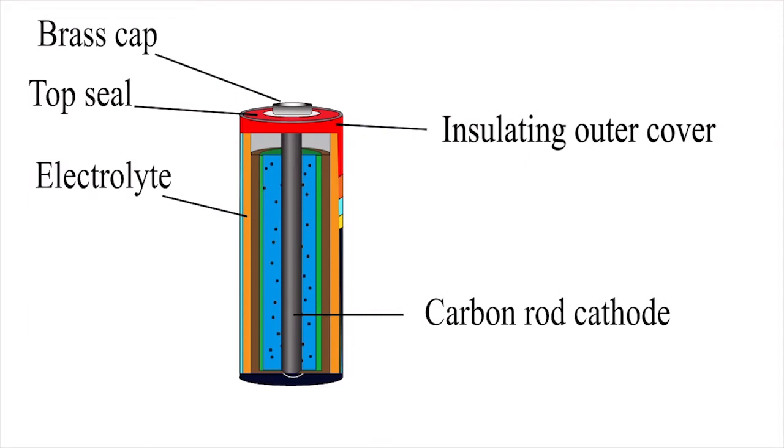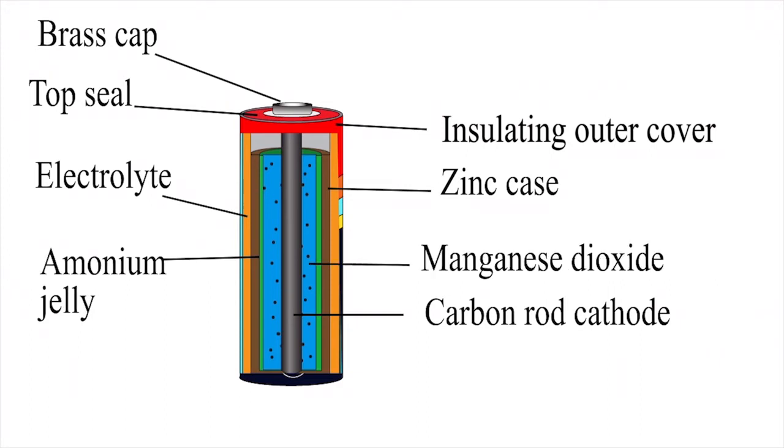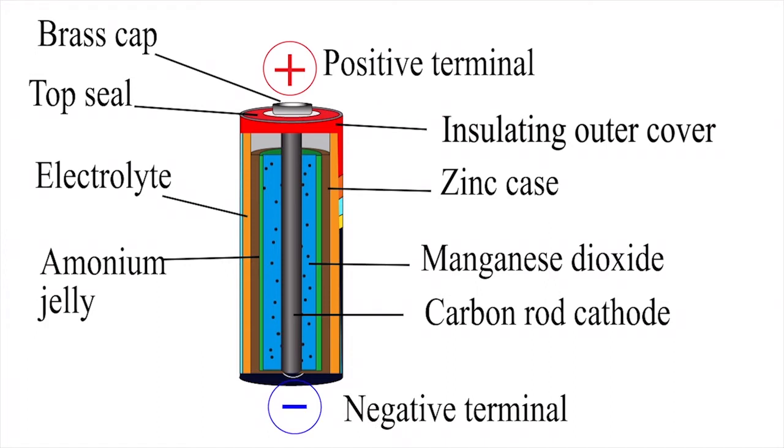Insulating outer cover and zinc anode. Ammonium chloride jelly and manganese dioxide paste in negative terminals, all parts of dry cell.